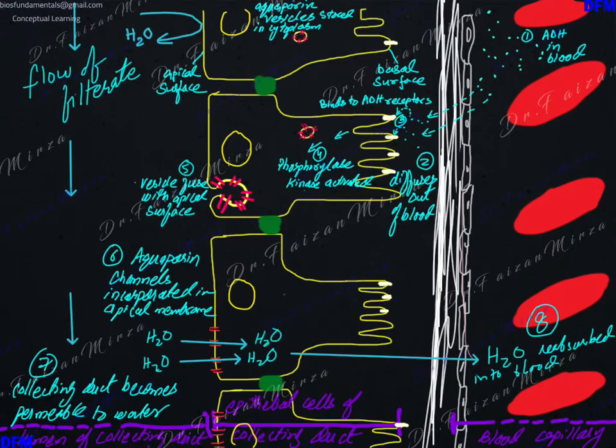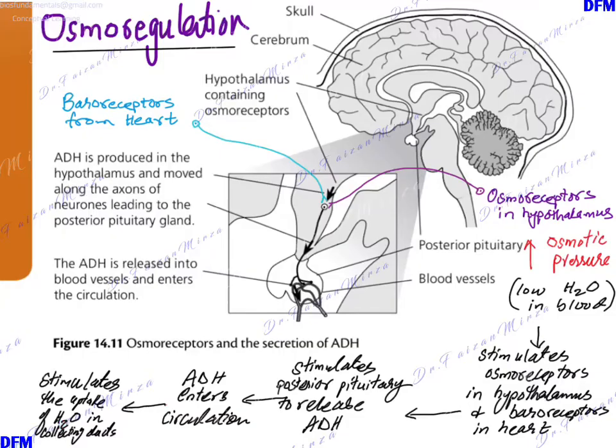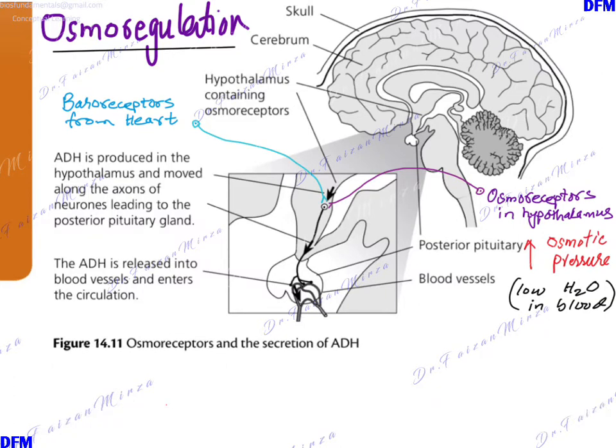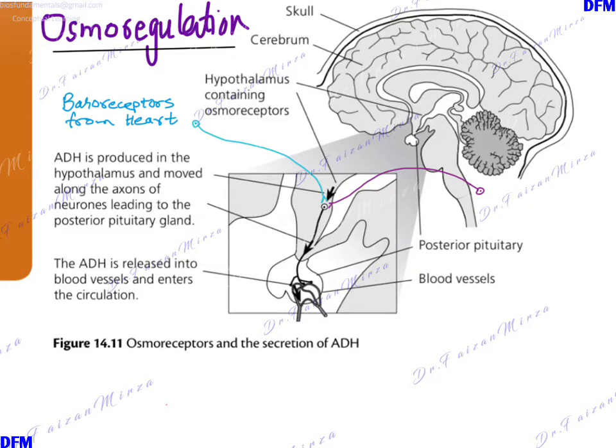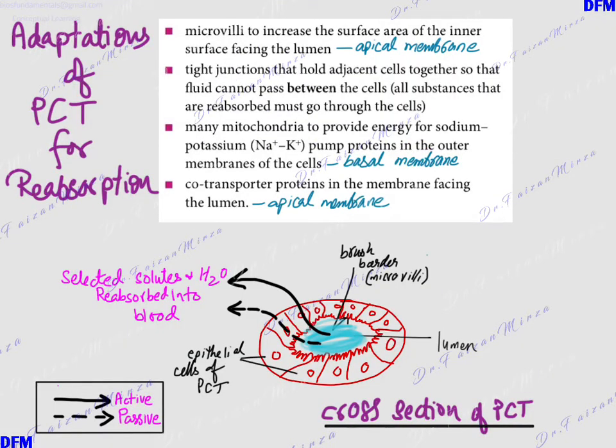Hello students, this is Dr. Faizan Mirza. We are discussing osmoregulation. Osmoregulation deals with how your body is capable of maintaining the osmotic pressure of your blood by retaining the right amount of water from the urinary filtrate.